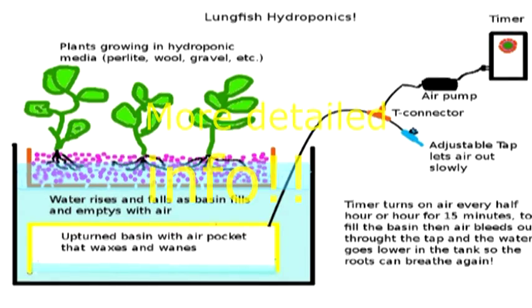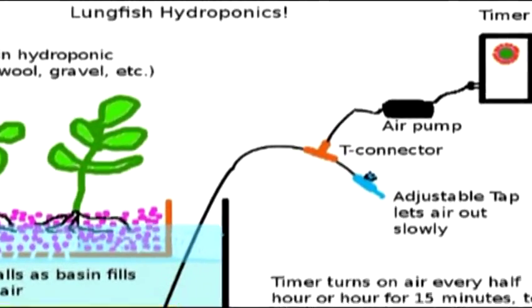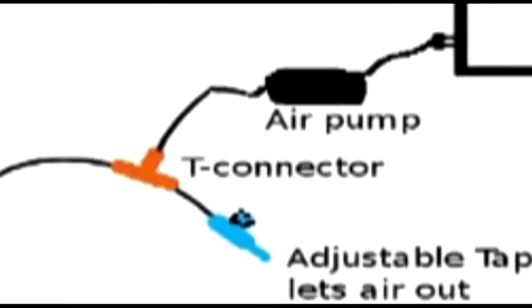It's a diagram to visually help you visualize it. There is an air pump and it's connected to a T-connector, and this little adjustable valve lets air hiss out all the time but not at a very fast speed.